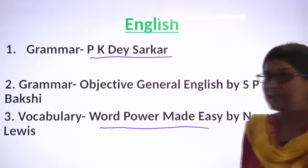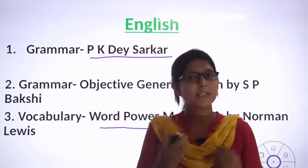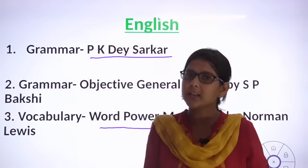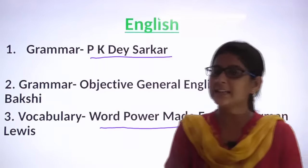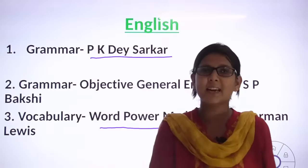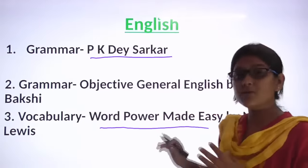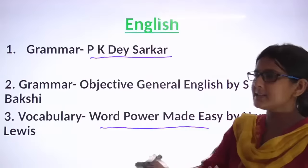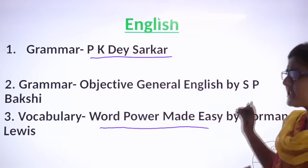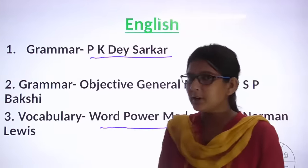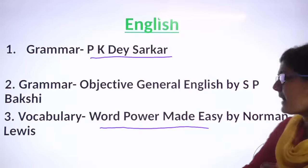Word Power Made Easy — this is a chapter-based book. How many words come in English — you are a part of the source. You can read it easily, every day one chapter. Read the notes and write it every day, every day one word. Then you can do it easily. You can do everything from grammar. You have to start with grammar — one-word substitution, idioms, etc. You can also use Objective General English by SP Bakshi. If you are good enough, you can also refer to Word Power Made Easy by Norman Lewis.